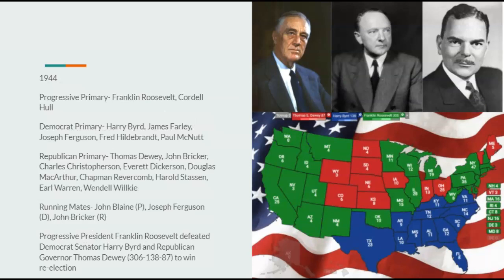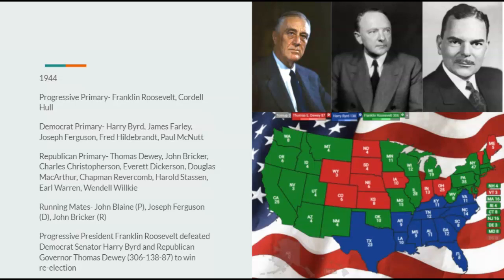Going on to 1944, Franklin Roosevelt would run again, facing a primary challenge from Cordell Hull, who would be unsuccessful. Democrats would nominate Harry Byrd and Republicans Thomas Dewey. Byrd would do very well in the South, Dewey in states he won in real life. Running mates include Progressive John Blaine, Democrat Joseph Ferguson, and Republican John Bricker — which is why Dewey wins Ohio. Progressive President Franklin Roosevelt would defeat Democrat Senator Harry Byrd and Republican Governor Thomas Dewey, 306 to 138 to 87, to win re-election.